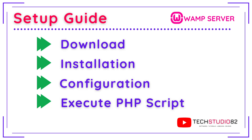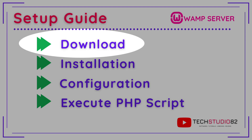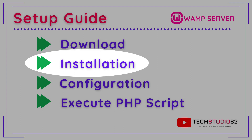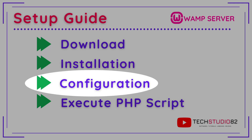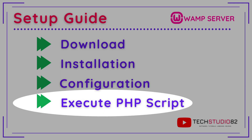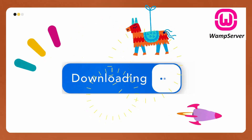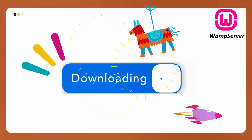Let's move on to the main content — the complete setup of WAMP server installation. We are going to do this in four steps. In the first step we will download the WAMP server software from the official website. In the second step we will install it on Windows 11. In the third step we will do some configuration to set up the environment. In the final step we will execute a small PHP script to test whether the software is working.